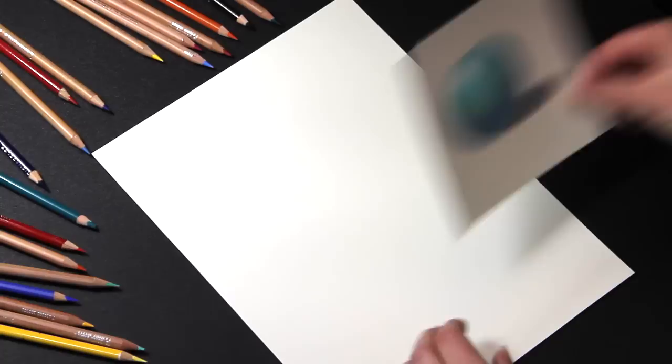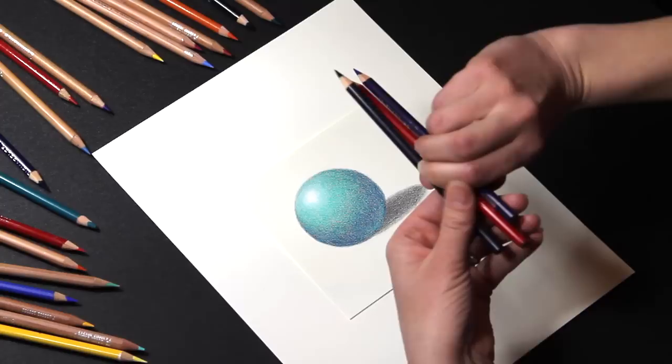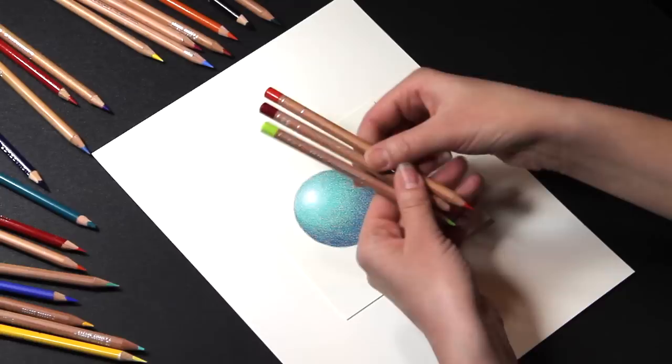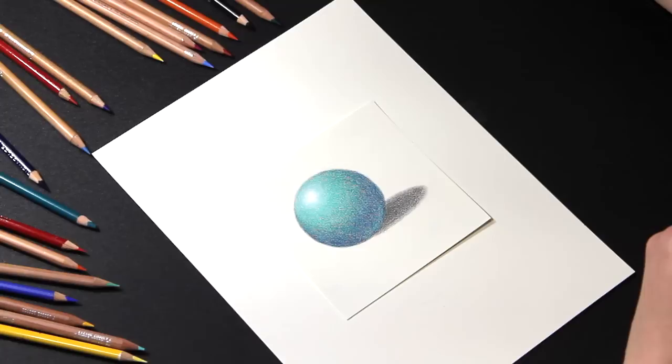I prefer colored pencils that are medium to soft in consistency, because I find it much easier to build up saturated color. So for this video, I'll be using two brands of artist grade colored pencils. Prismacolor Premier colored pencils, which are soft and waxy, and Caran d'Ache Luminance pencils, which have a smooth creamy consistency. Both of these brands have a high pigment concentration, so I can achieve intense saturated color in my drawing.